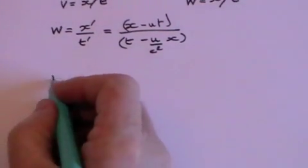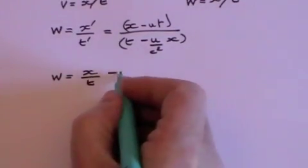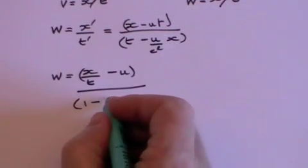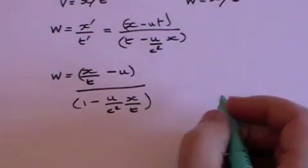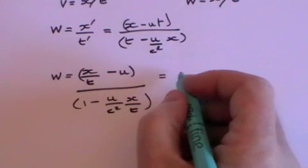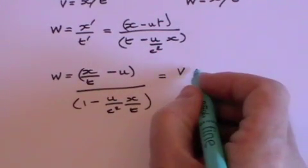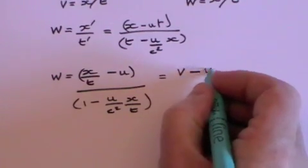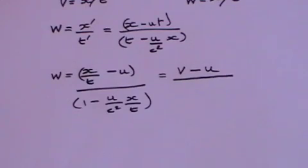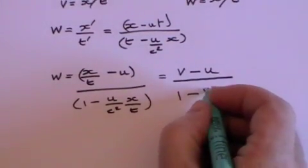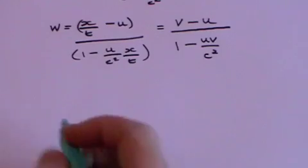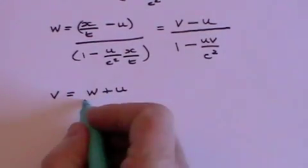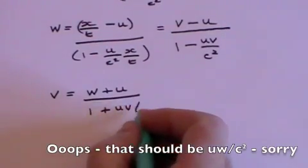If we divide all those terms by t, we get x divided by t minus u, minus u, divided by 1 minus u over c squared times x over t. But x over t is simply the velocity measured by S, v. And so we get that w equals v, the velocity measured by S, minus u, the relative speed between S and S prime, divided by 1 minus u v over c squared. And similarly it works the other way: v equals w plus u divided by 1 plus u v over c squared.